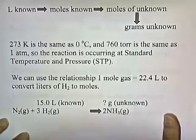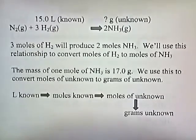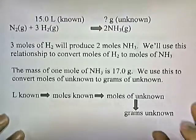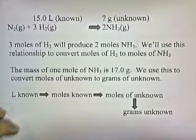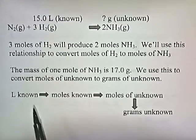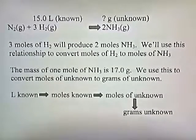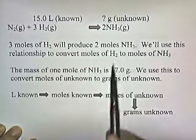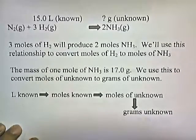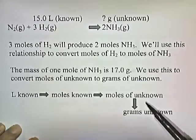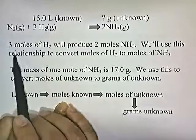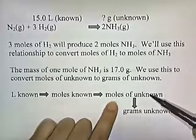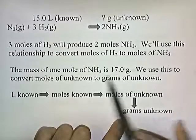There are some more equalities we need to know for this reaction. Three moles of H₂ will produce two moles of NH₃, and we'll use this relationship to convert moles of H₂ to moles of NH₃. We also need to know that the mass of one mole of NH₃ is 17 grams, and we'll use this to convert moles of unknown to grams of unknown. To go from moles of known to moles of unknown, we use the 3-to-2 ratio.